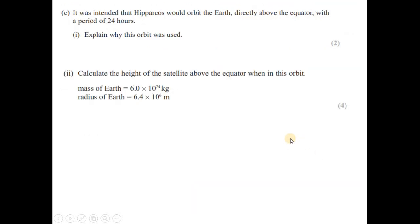It was intended that Hipparchus would orbit the earth directly above the equator with a period of 24 hours. Explain why this orbit was used. So if the period of an orbit is 24 hours, it is a geostationary orbit and it is quite suitable because the satellite can be located easily and can be communicated with the satellite in an easy way.